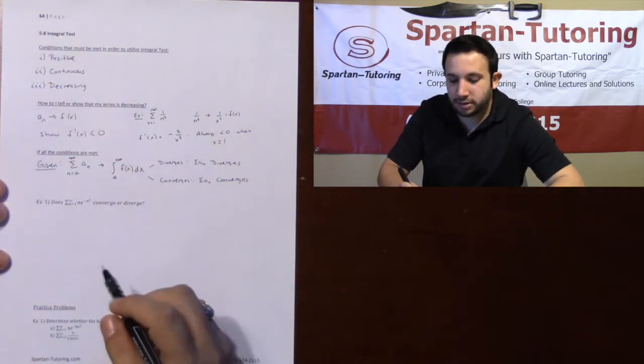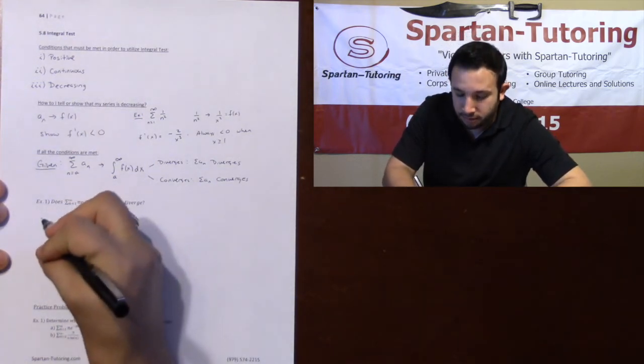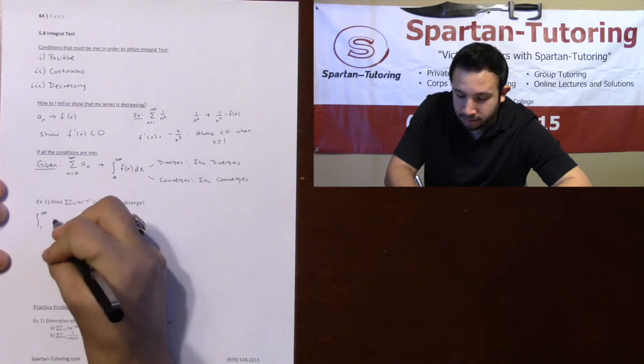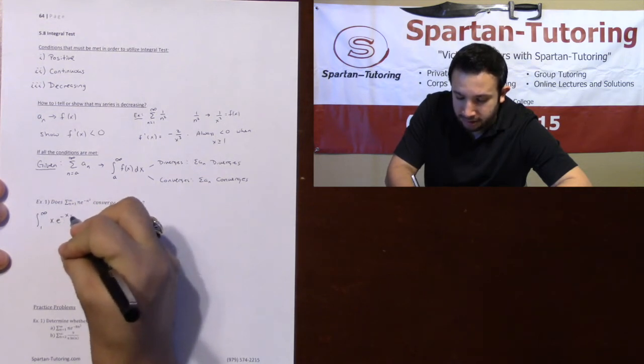Let's say we've already gone through the positive, continuous, and decreasing. Let's go ahead and just apply the integral test. The way that you would do that is you would take the integral from 1 to infinity of x e^(-x²).